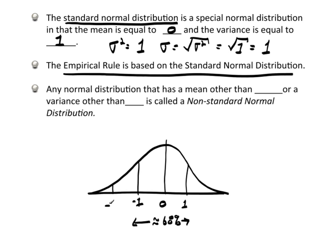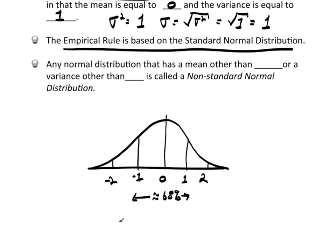If I go out to plus and minus 2, the empirical rule says I should have approximately 95% of all my data. And then obviously one more is 99.7, or approximately all of it.